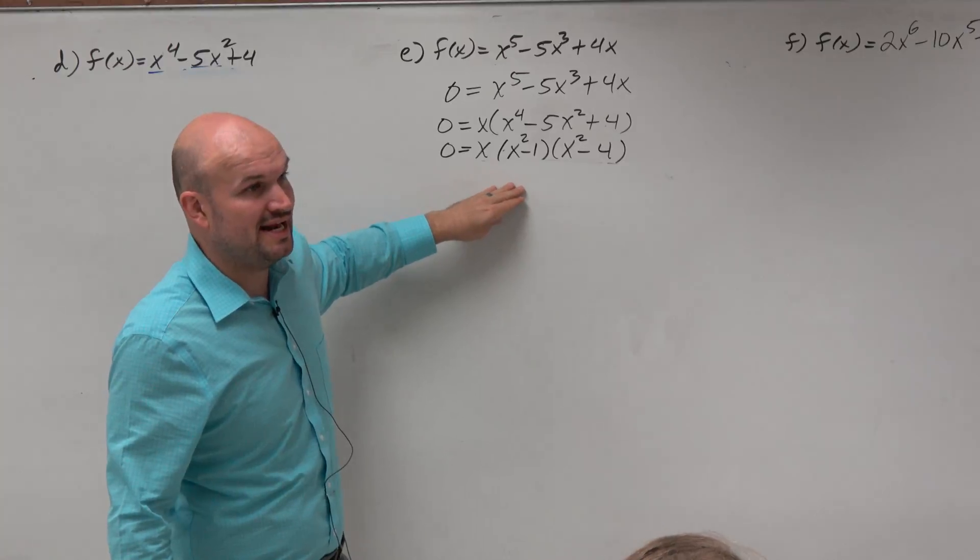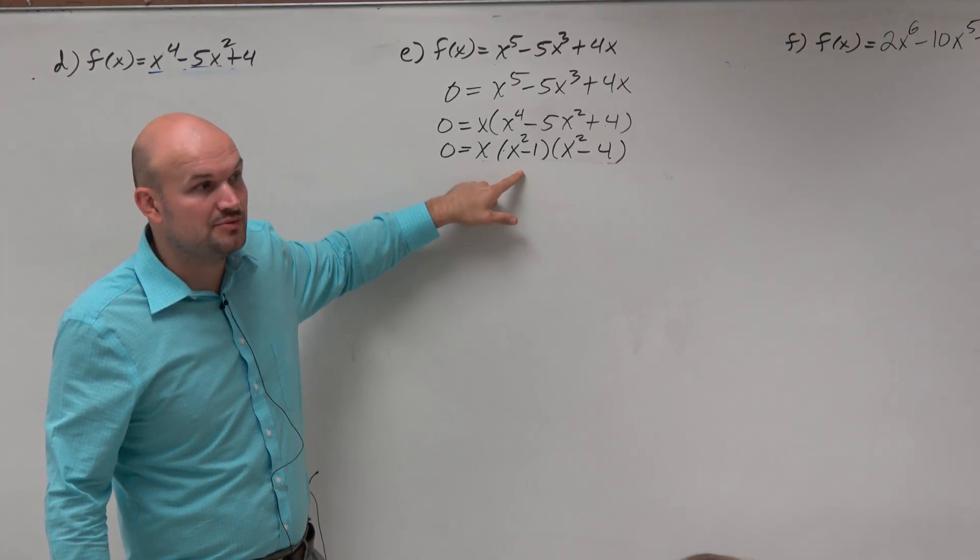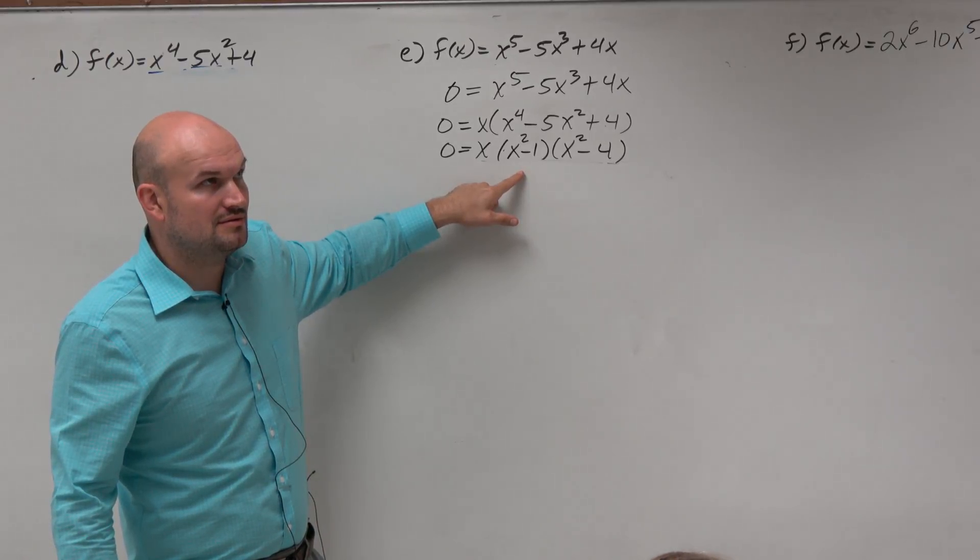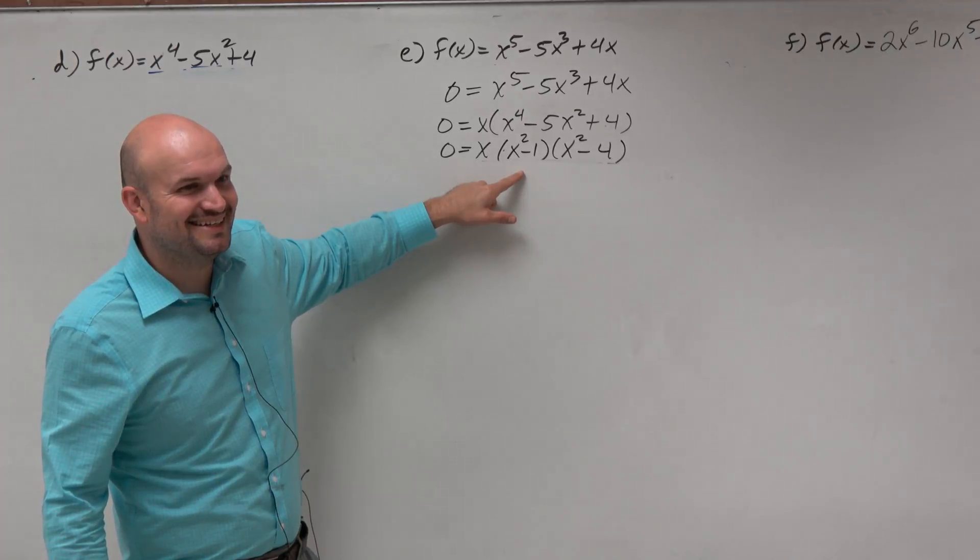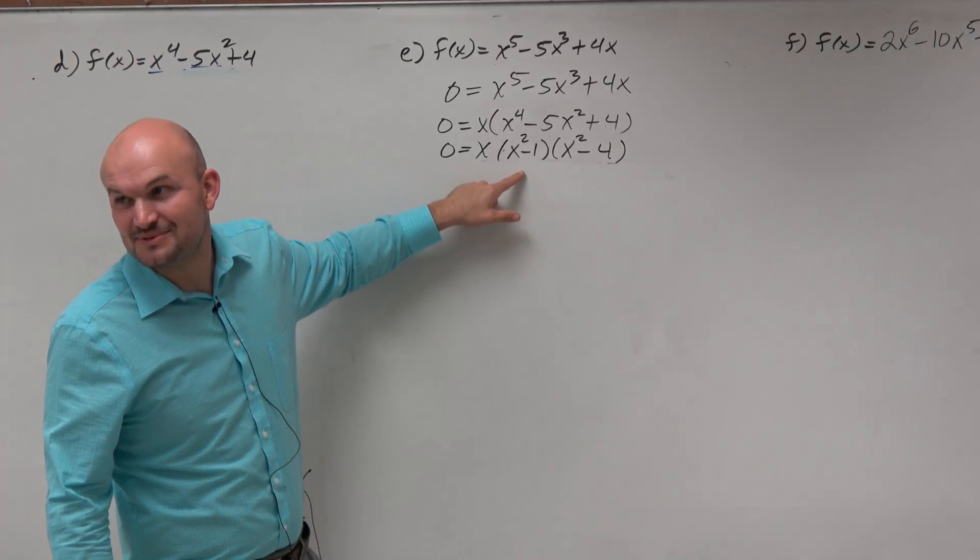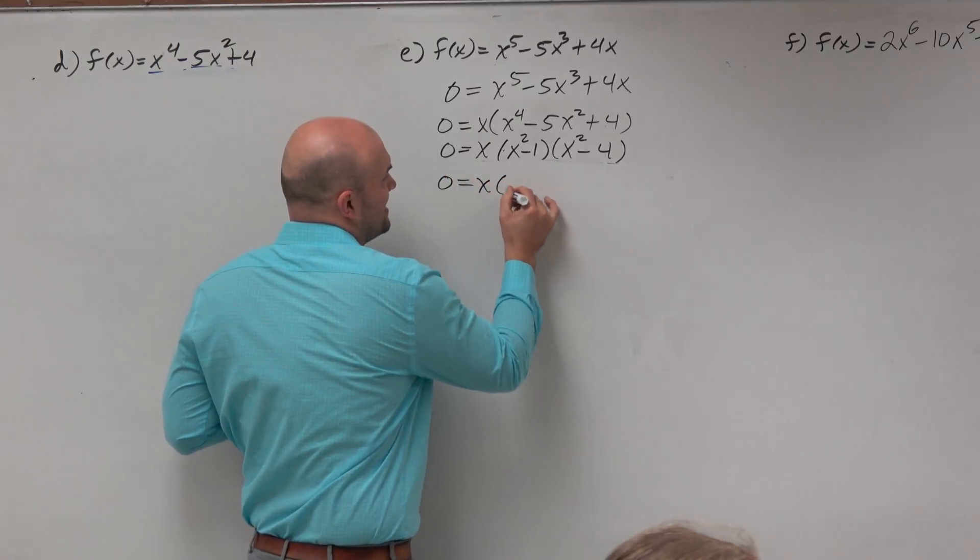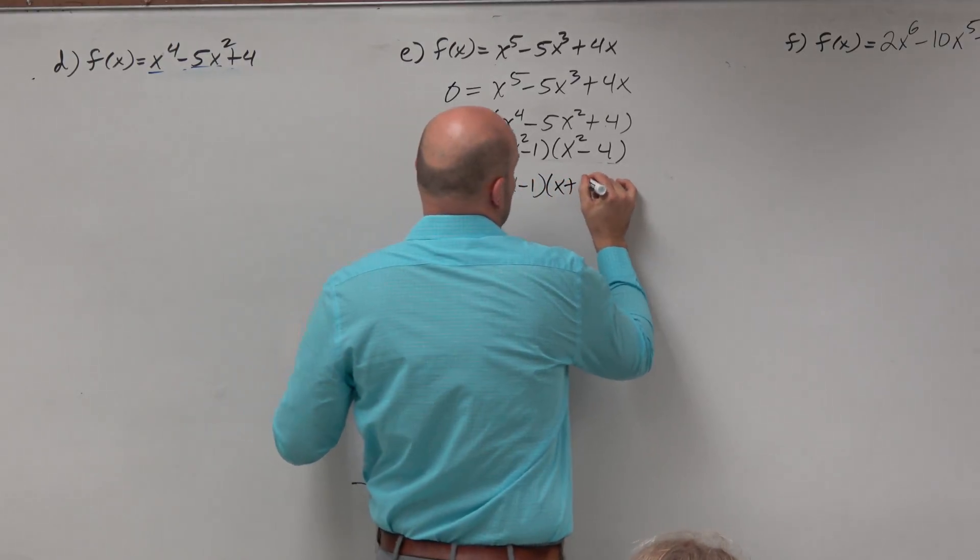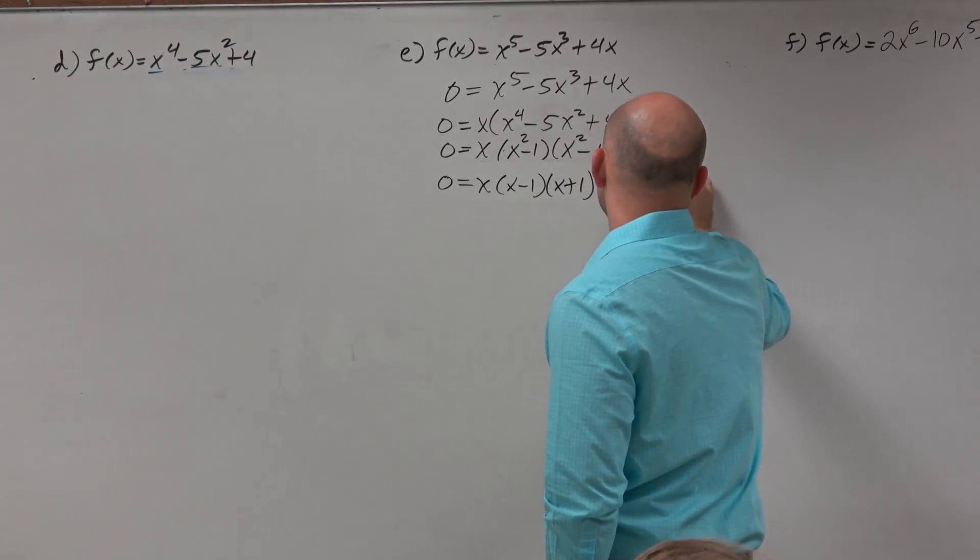And hopefully, out of those 80 examples, you remember seeing x squared minus 1, which we can factor using the difference of two squares. So if you guys think of this one as x times x minus 1 times x plus 1, x squared minus 4 can be written as x minus 2 times x plus 2.